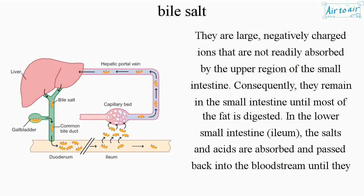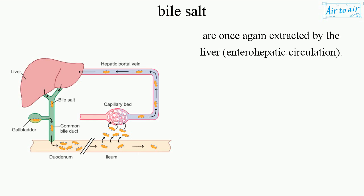Bile salts are large negatively charged ions that are not readily absorbed by the upper region of the small intestine, so they remain there until most of the fat is digested. In the lower small intestine, the ileum, the salts and acids are absorbed and passed back into the bloodstream until they are once again extracted by the liver — a process known as enterohepatic circulation.